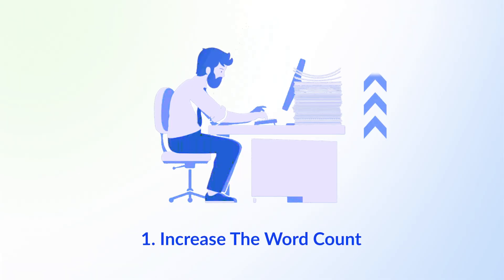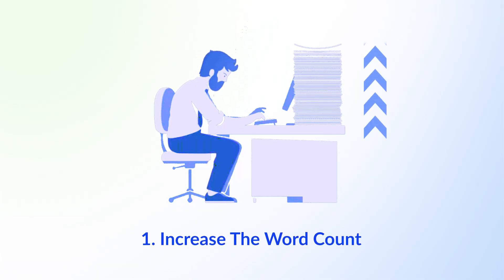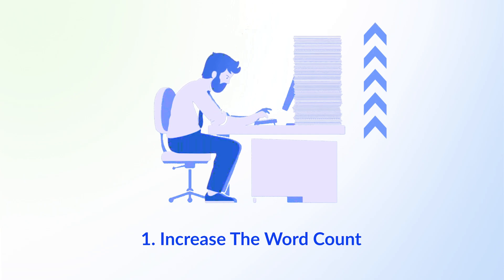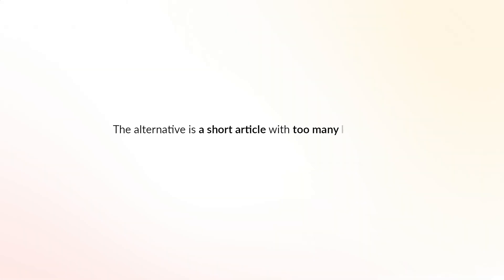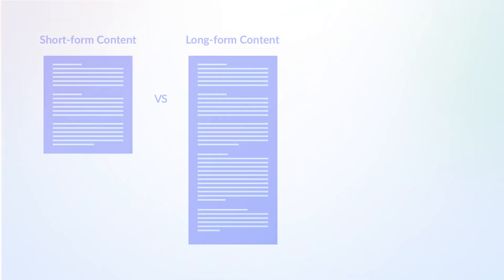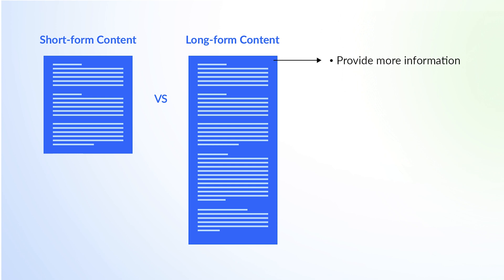But if you do want to observe keyword density in your articles, here's how to keep it natural — and you may want to bookmark this section. Number 1: increase the word count. Creating longer content is the most common and effective way to make the keyword density more natural. The alternative is a short article with too many keywords, which of course you should avoid. Also remember that long-form content provides more information, which is good for the reader and can help you rank for more keywords.